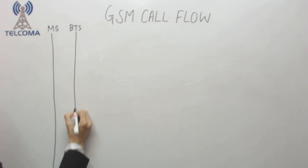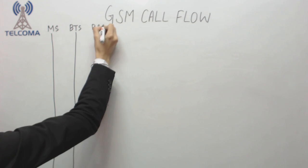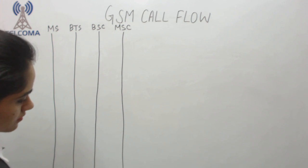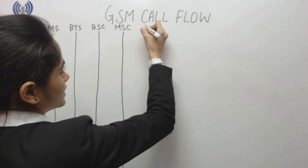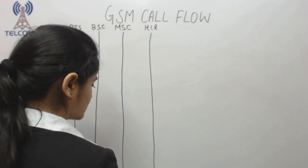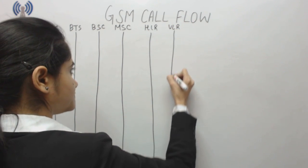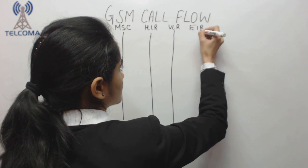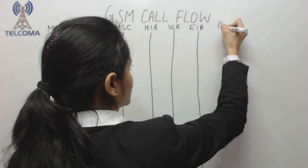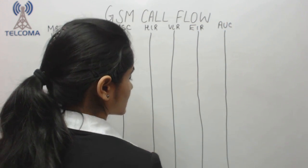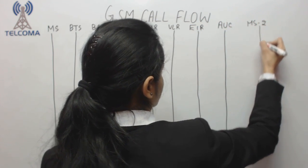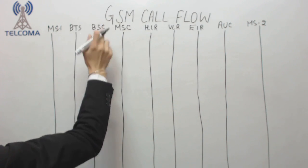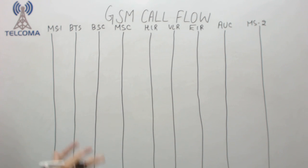After BTS we have BSC, then MSC, HLR, VLR, EIR, and AU. We also have a second Mobile Station — we will assume this is Mobile Station 2, which is the destination of the call. Both mobile stations are assumed to be under the same MSC, BSC, and BTS, and they have to call one another.